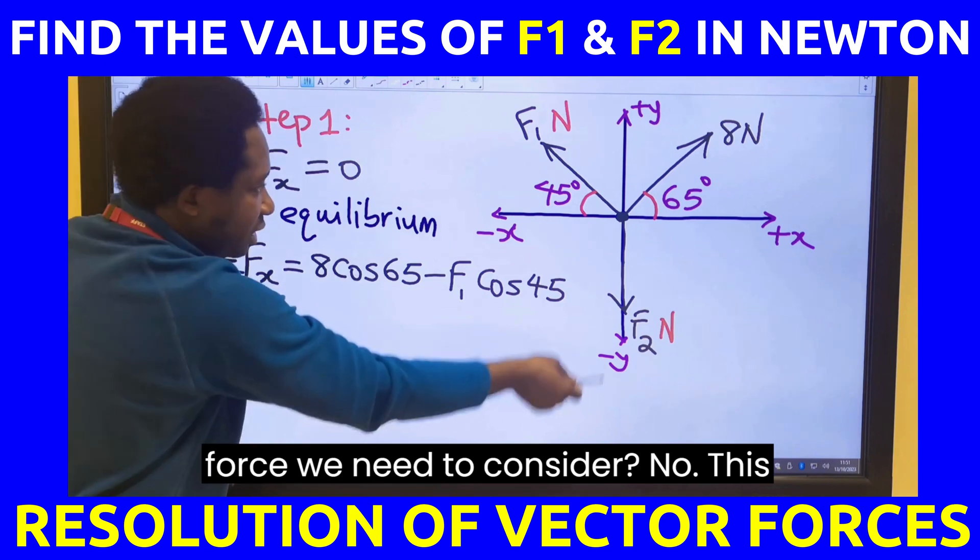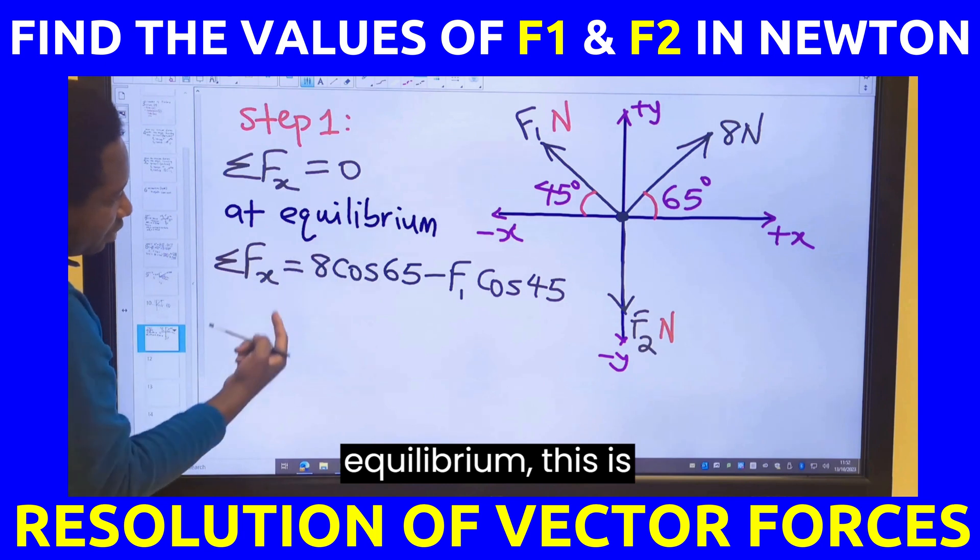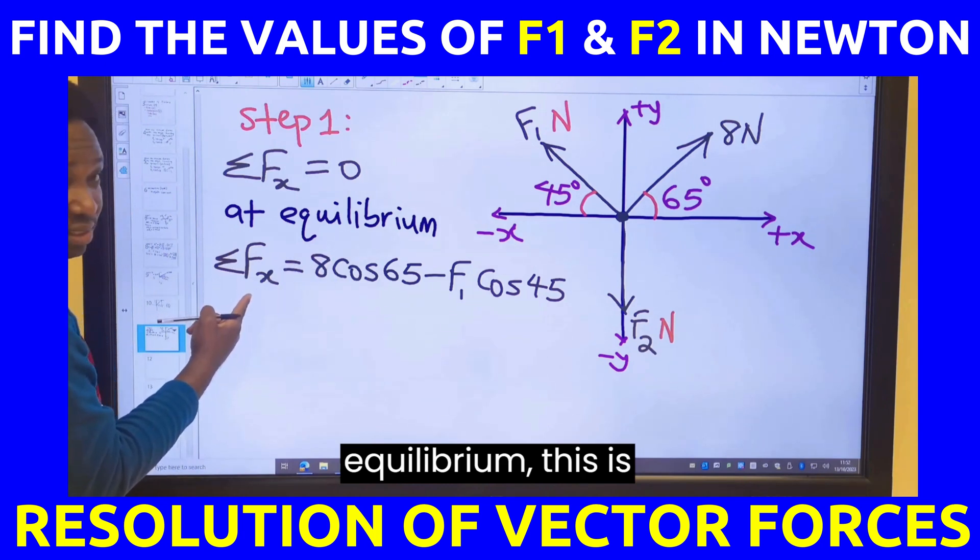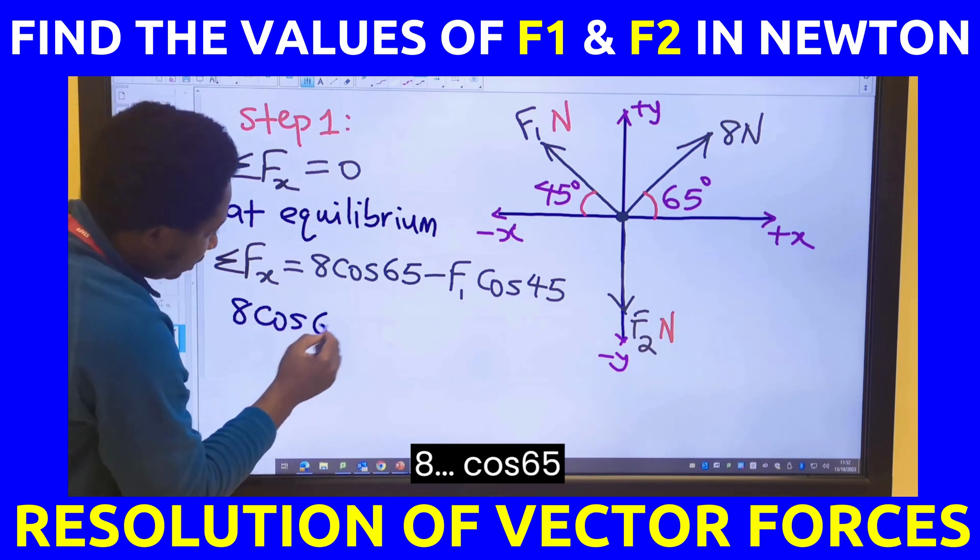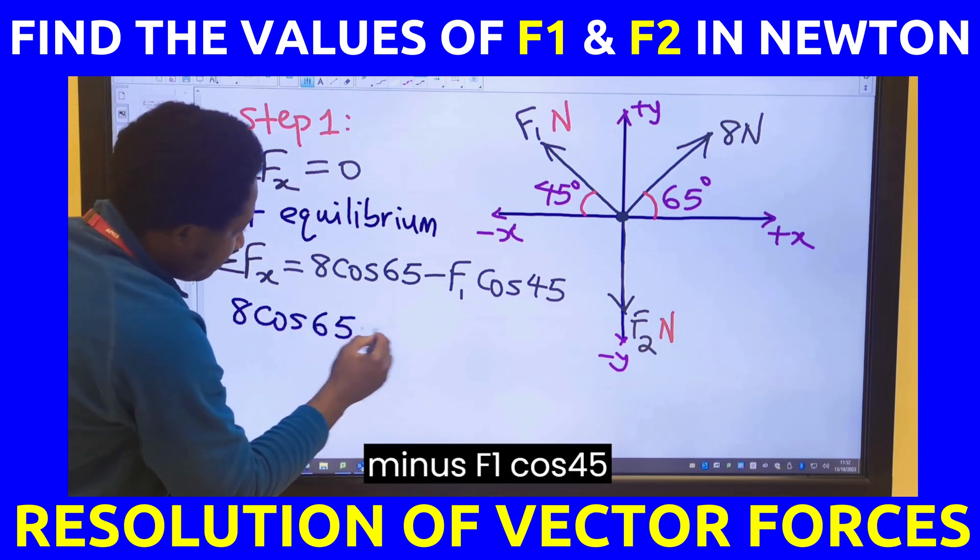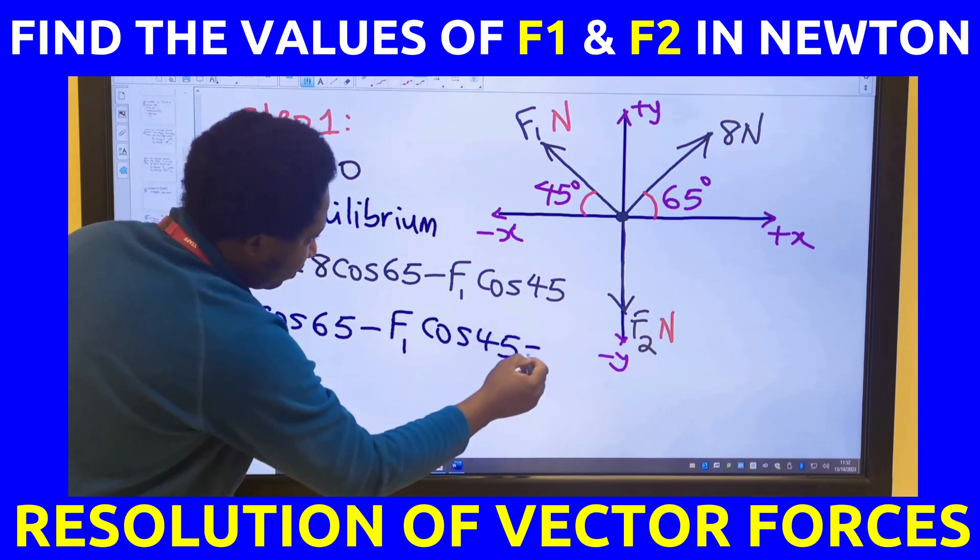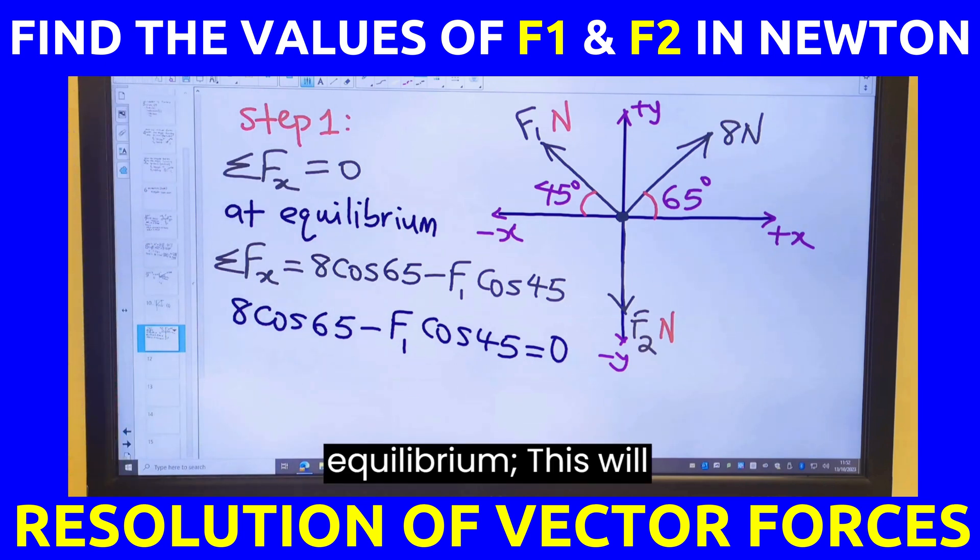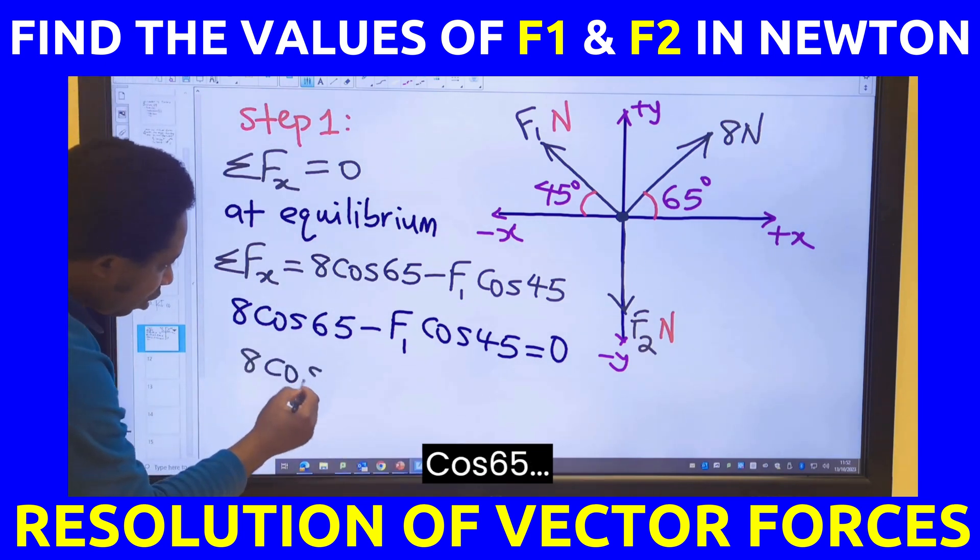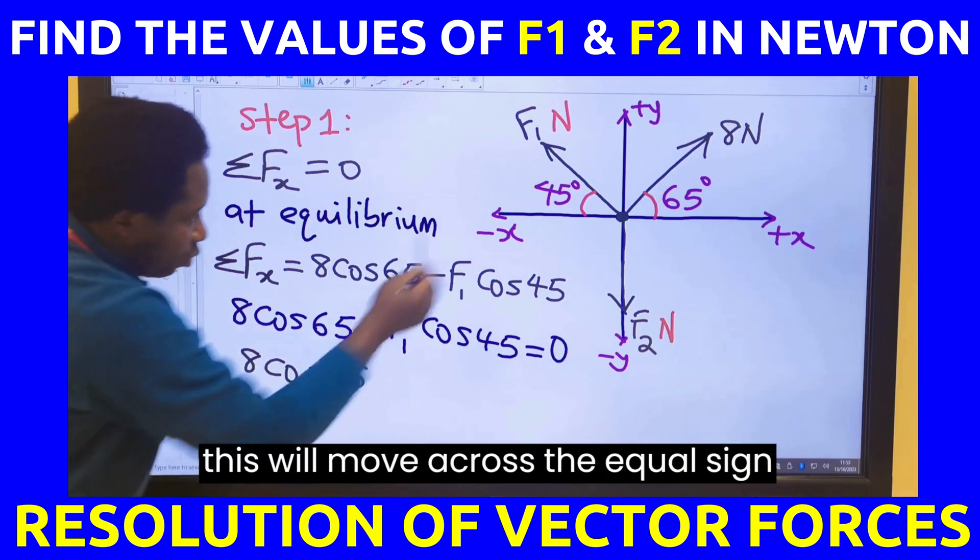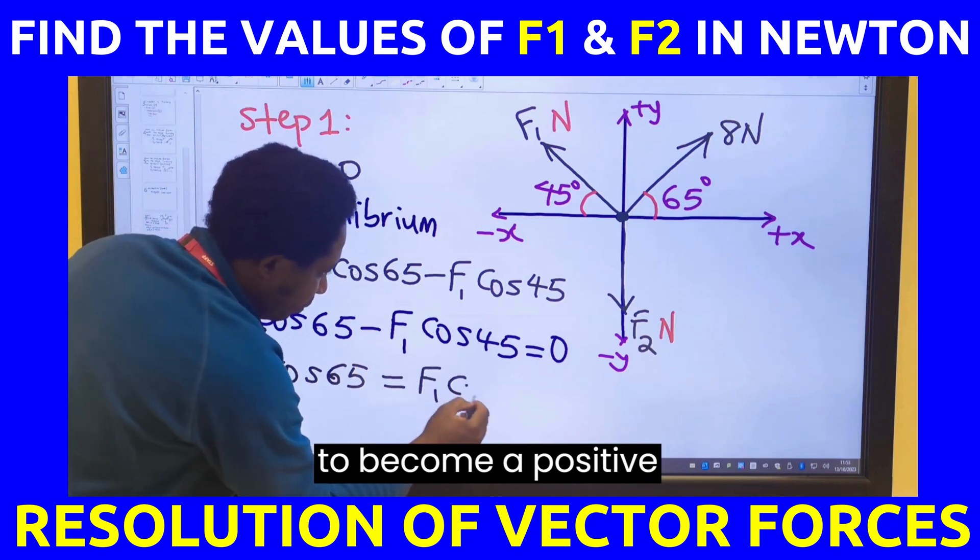Is there any other force we need to consider? No. This is standing on the y-axis. I will not consider it. At equilibrium this is 0. So I will have 8 cos 65 minus F1 cos 45 is equal to 0 at equilibrium. This will remain 8 cos 65. This will move across the equal sign to become a positive value.